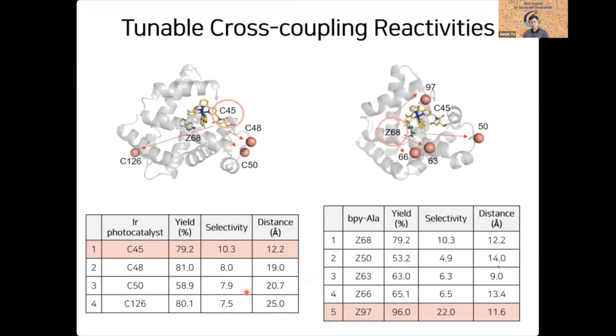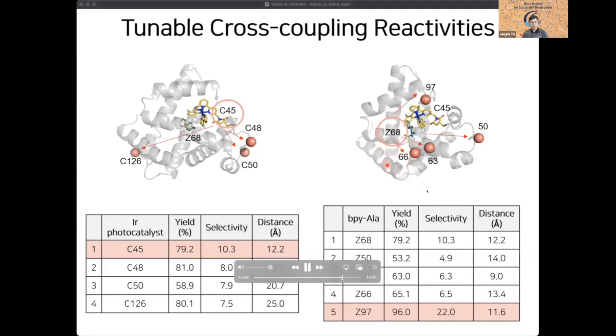Alternatively, we can also change the local environment of these inorganic catalysts and see how that affects the reactivity. In this second case, we basically kept the distance between these nickel catalyst and the photocatalytic catalyst to be roughly about 10 angstrom. But what we did was basically move the location of the nickel bipyridyl species from 68 to all the way to 50 or 97. As you can see, the distance is about the same. However, the yield and the selectivity differ quite drastically, suggesting that the microenvironment of these inorganic catalysts is very important for this photocatalytic cross-coupling reaction, presumably because the surrounding amino acid residues can influence the overall catalytic process.